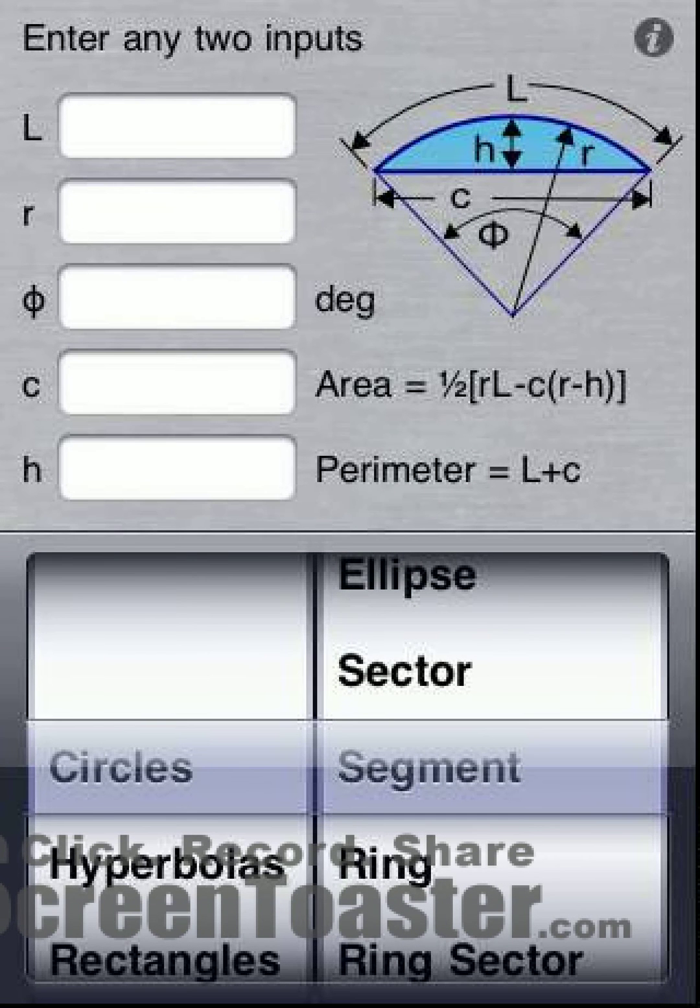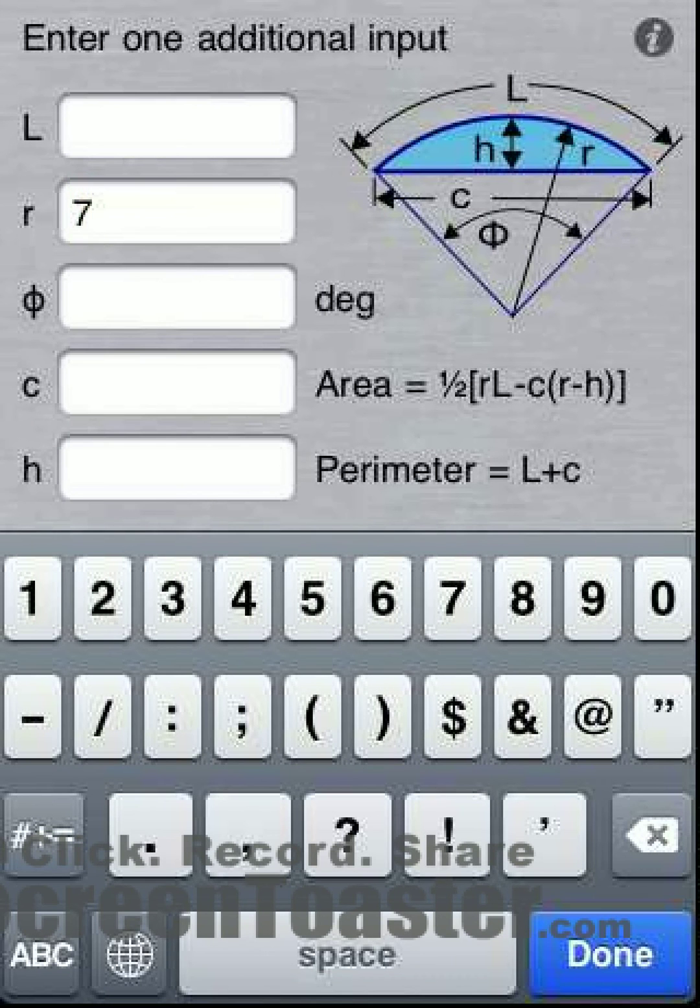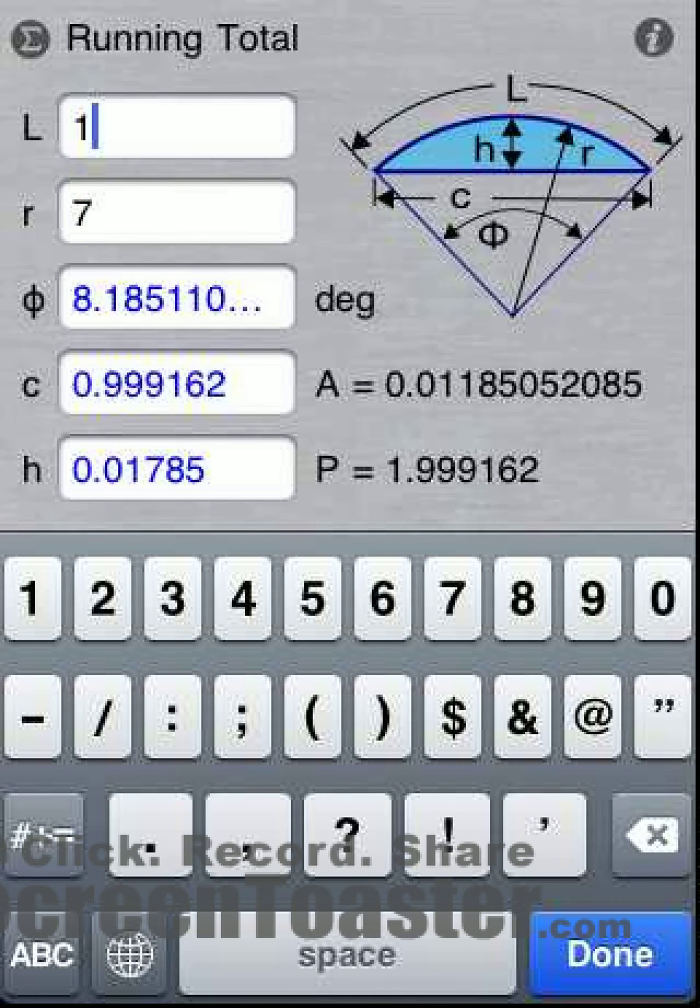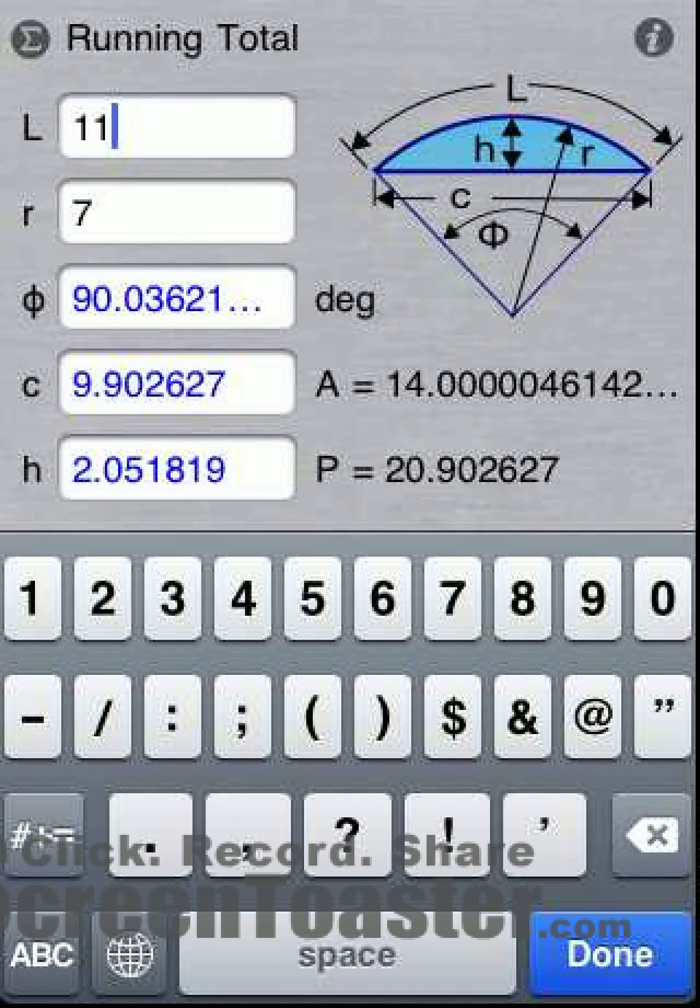We'll enter a radius of 7 first, as the order does not matter. We'll enter 11 for the arc length. In addition to the area and perimeter, all the other parameters are immediately calculated.